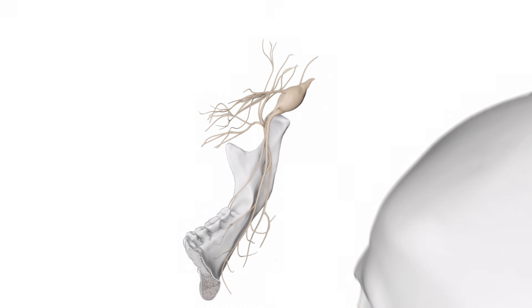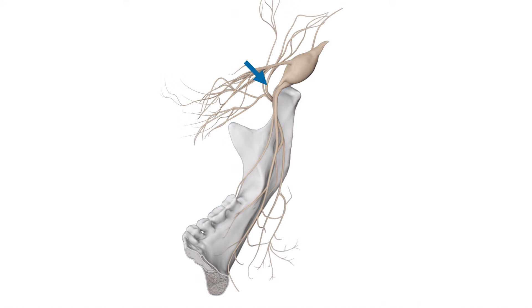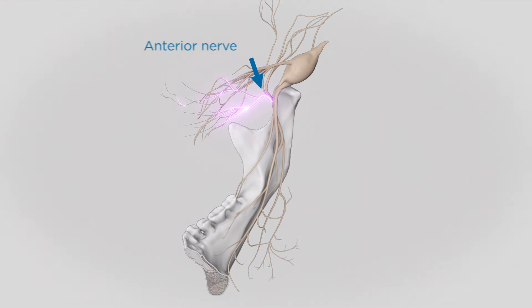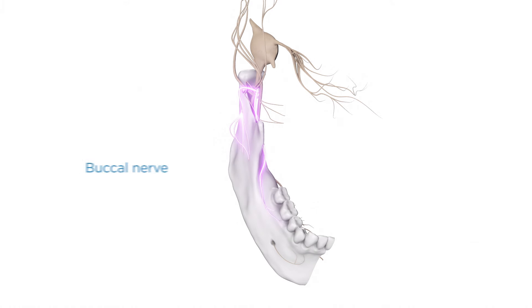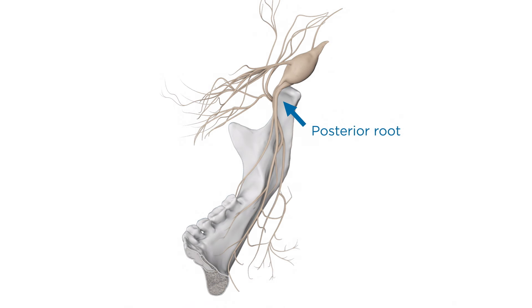The mandibular nerve passes through the foramen ovale down into the infratemporal fossa, where it separates into a small anterior and a large posterior root. The anterior root gives off motor branches that innervate the muscles of mastication, and then, as the buccal nerve, crosses the coronoid notch of the ramus to innervate the cheek. Small fibers pass through the buccinator muscle to supply the buccal gingiva and mucosa in the posterior mandible. The posterior root is predominantly sensory, though it provides motor innervation to the mylohyoid muscle and the anterior belly of the digastric muscle.